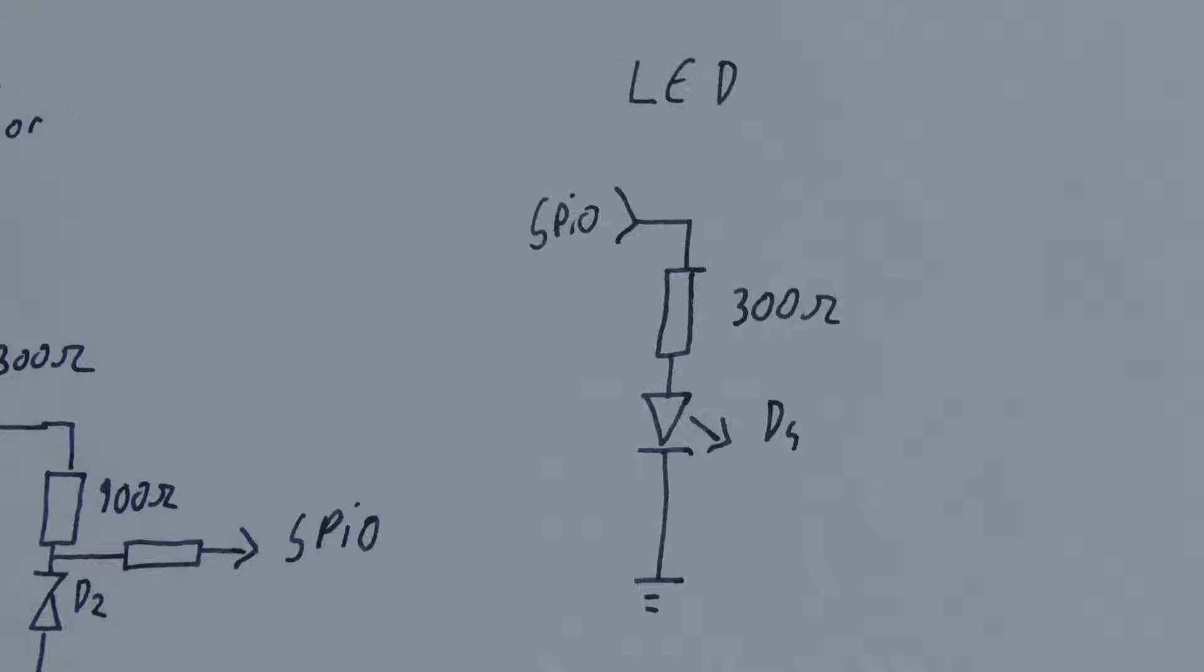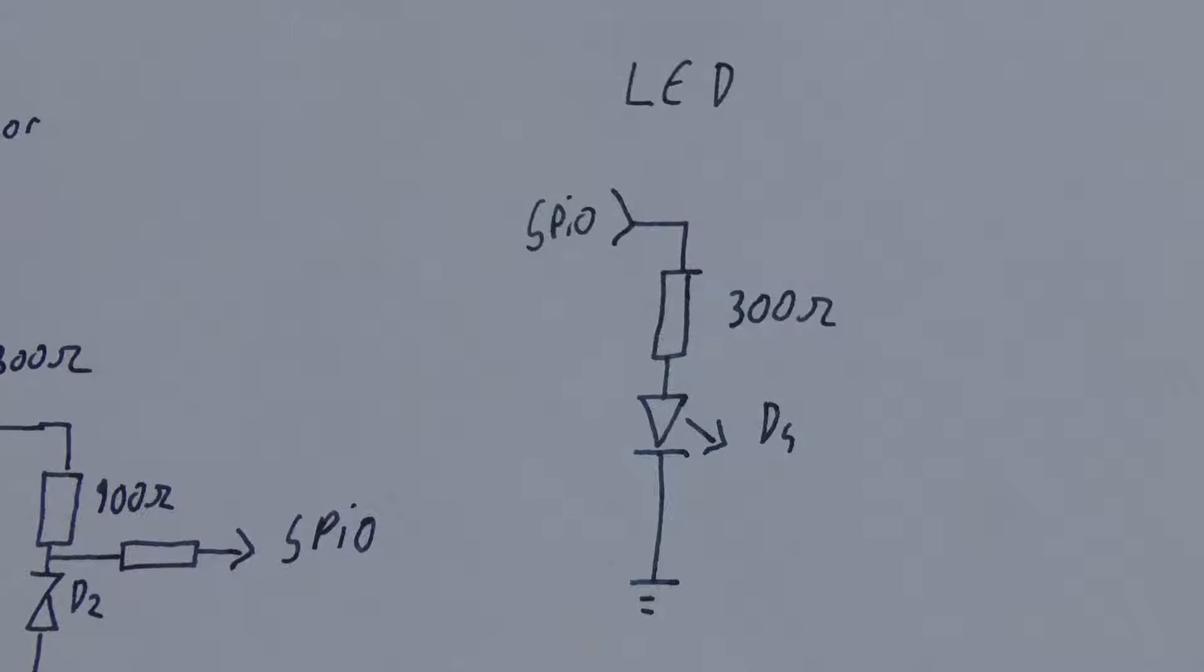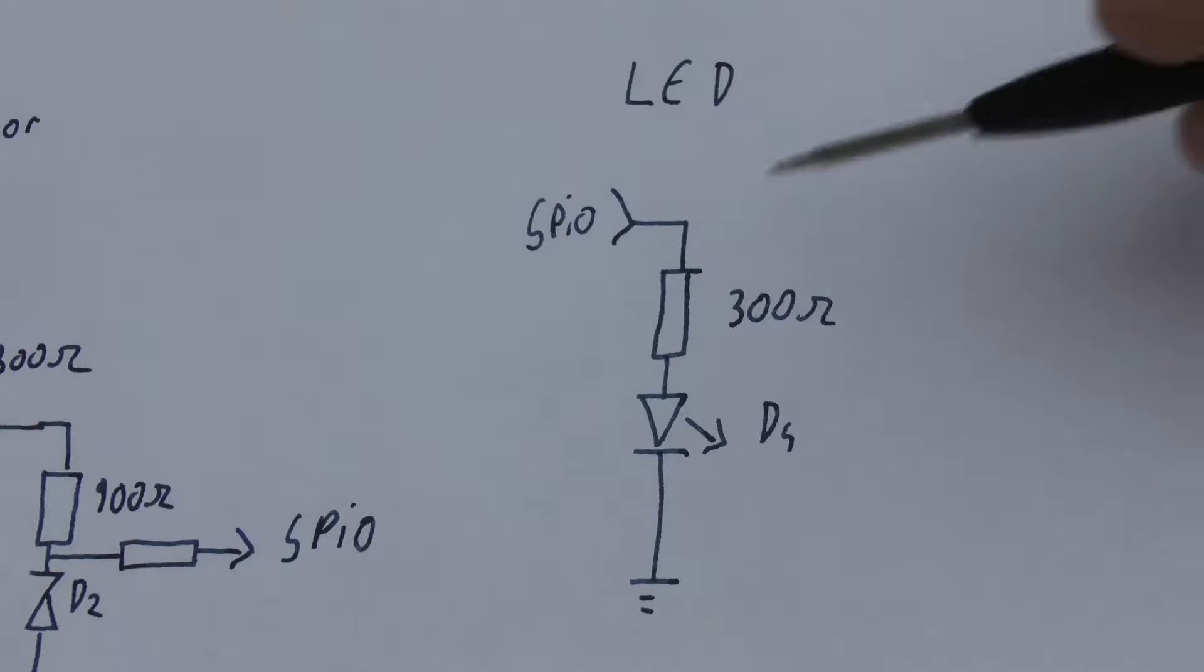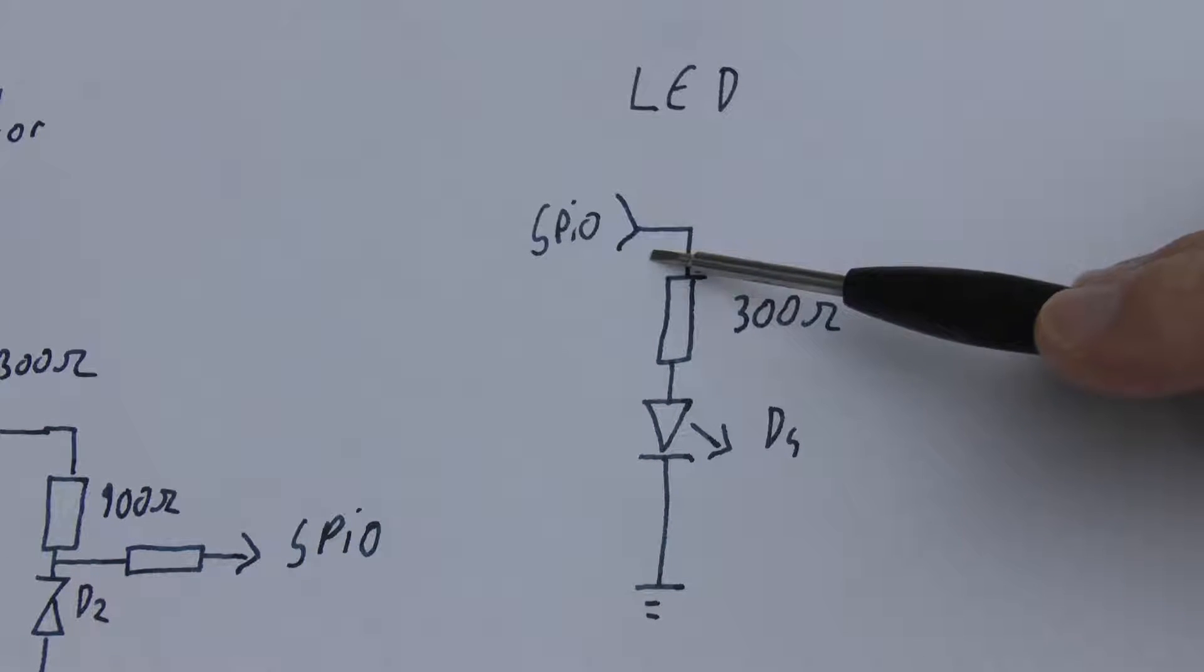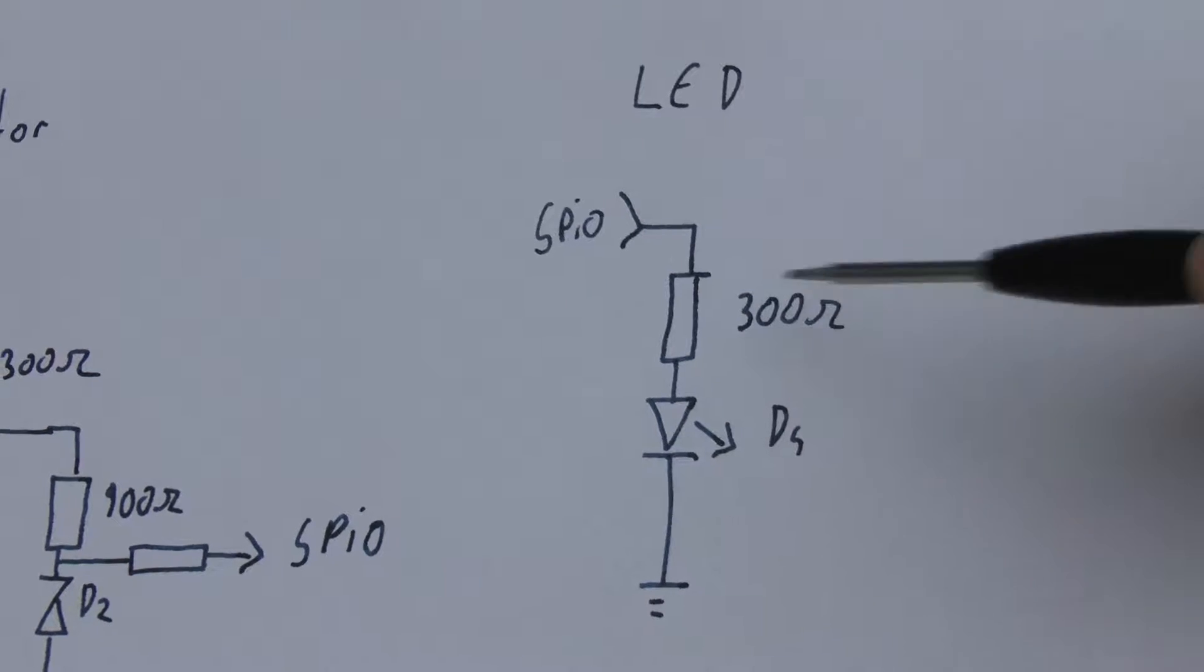When you are working on a commercial project, saving money is really important. And one nice way to save cash involves directly driving the LED from the GPIO pin of your microcontroller.